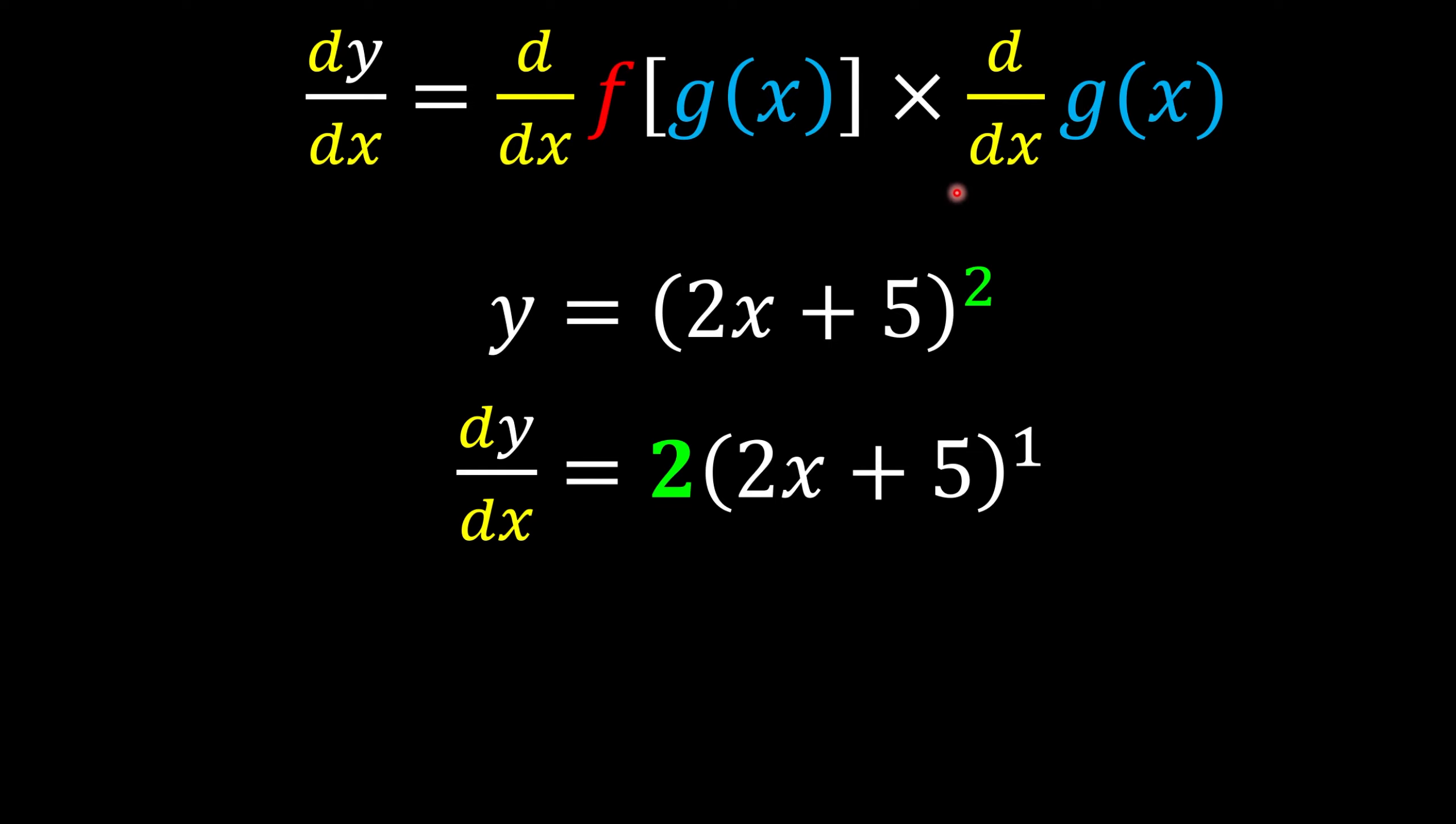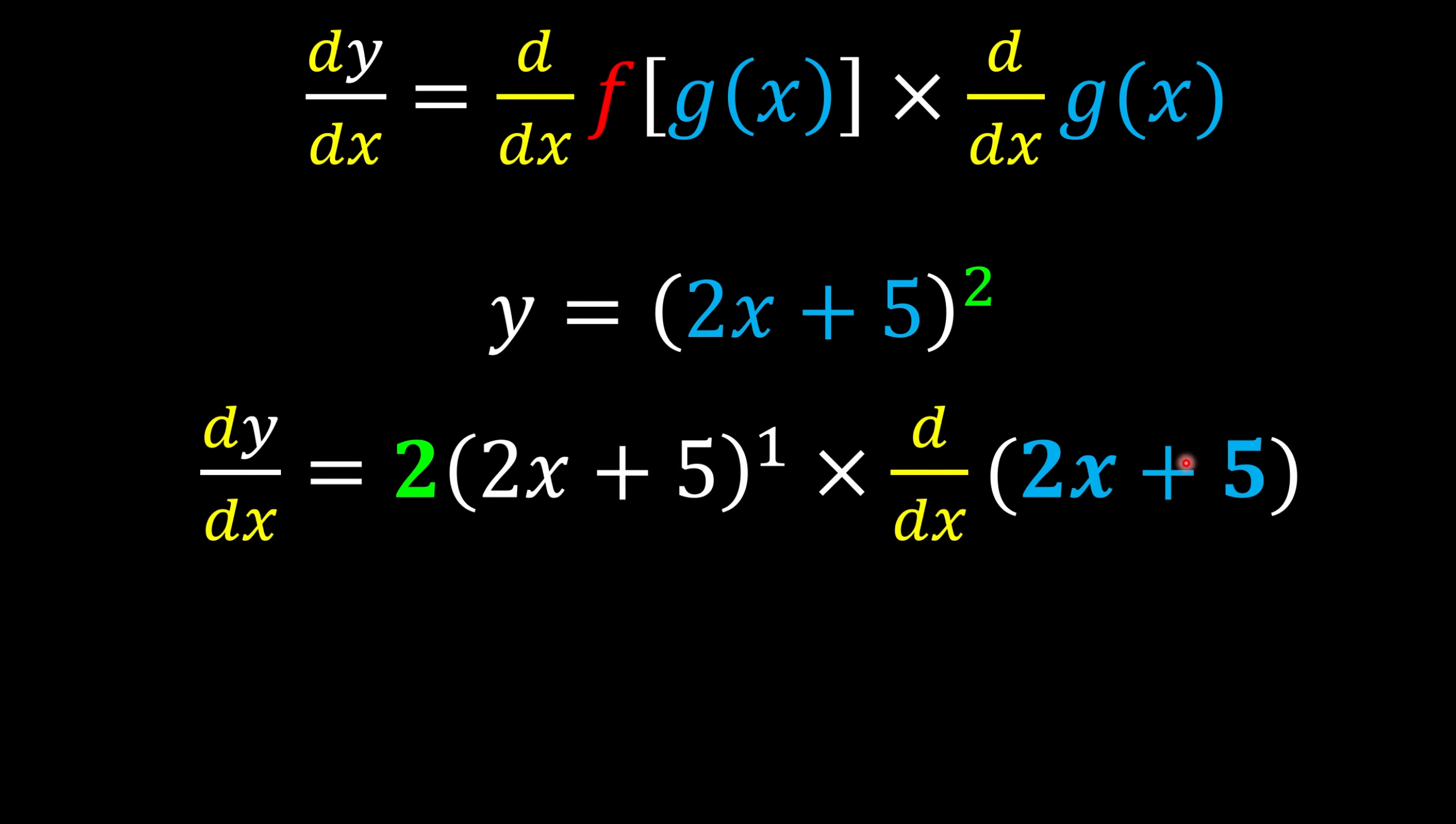And the second part is we're going to take the derivative of the inner function. So this one, the inner function is 2x plus 5. So we're going to take the differentiation of this one. If we take the derivative, 1 goes to the front, 2 times 1 is 2.